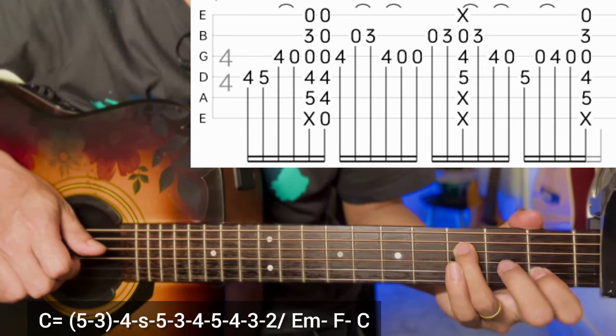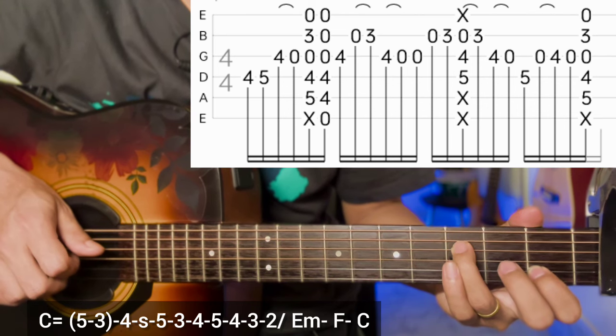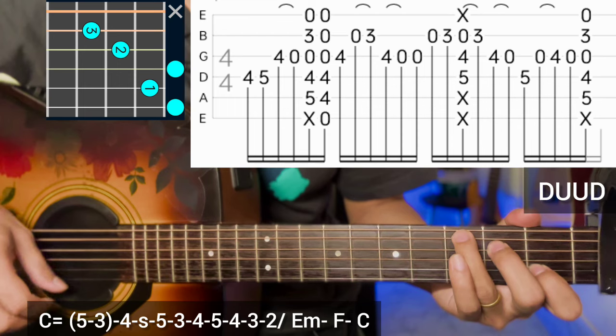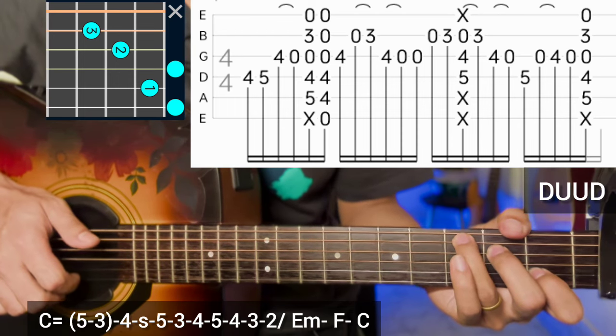Third string open, hammer on. Repeat C major chord with down-up-up-down strumming and bending on F triad.